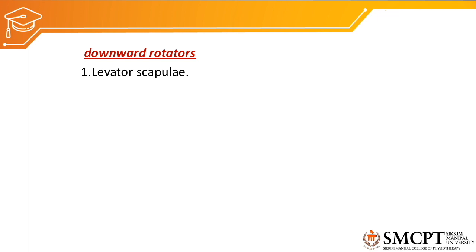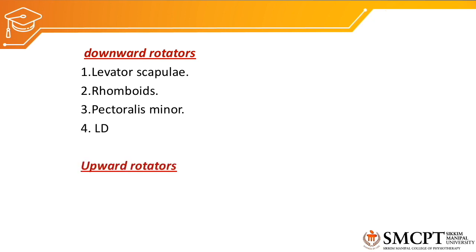What are the muscles that produce downward rotation of the scapula? They are the levator scapulae, rhomboids, pectoralis minor, and latissimus dorsi. The upward rotators of the scapula are the deltoid, trapezius, and serratus anterior.